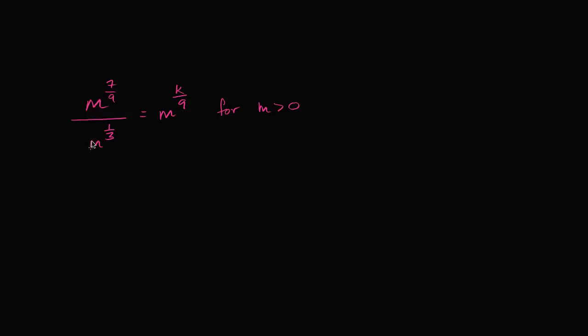First, we can look at this rational expression here, m to the 7/9th power divided by m to the 1/3rd power. And the key realization here is that if I have x to the a over x to the b, that this is going to be equal to x to the a minus b power.